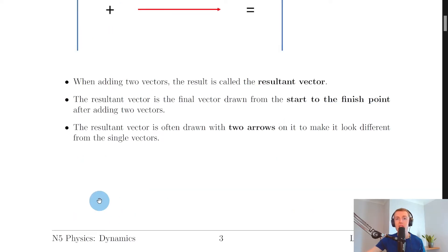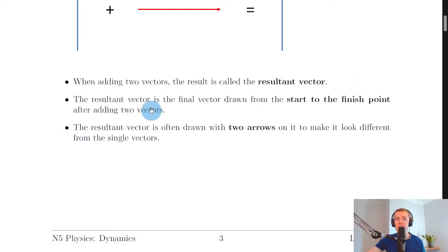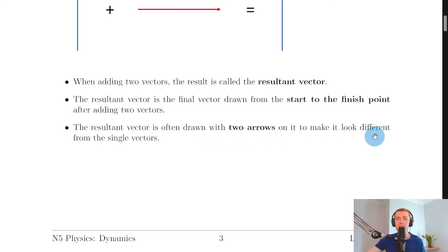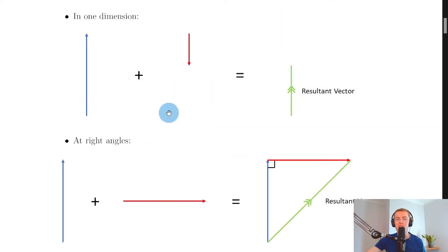When adding two vectors together, the result is called the resultant vector. The resultant vector is the final vector drawn from the start to the finish point after adding two vectors. The resultant vector is often drawn with two arrows on it to distinguish it from the individual single vectors.